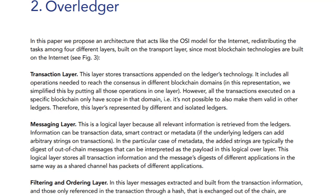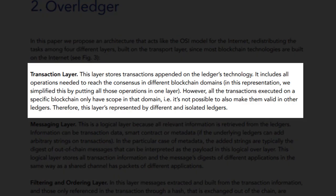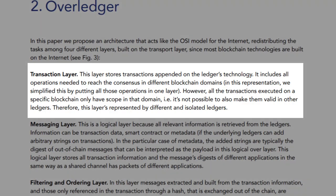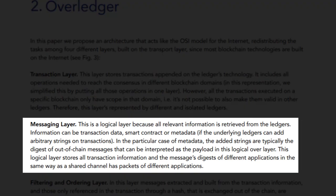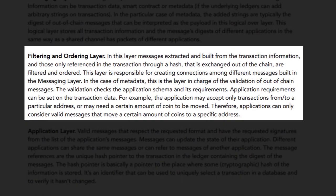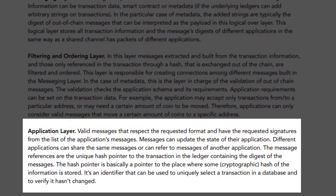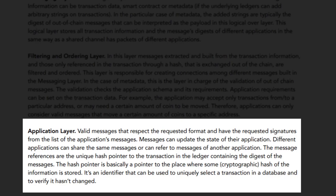The four layers are: at the bottom, the Transaction Layer, which stores transactions appended on the ledgers' technology. Next is the Message Layer, a logical layer where all relevant information is retrieved from the ledgers. Then the Filtering and Ordering Layer, where messages extracted from transaction information are filtered and ordered, and those only referenced via a hash out of chain are handled. Finally, the Application Layer, where valid messages respecting the requested format and having the requested signatures are processed.